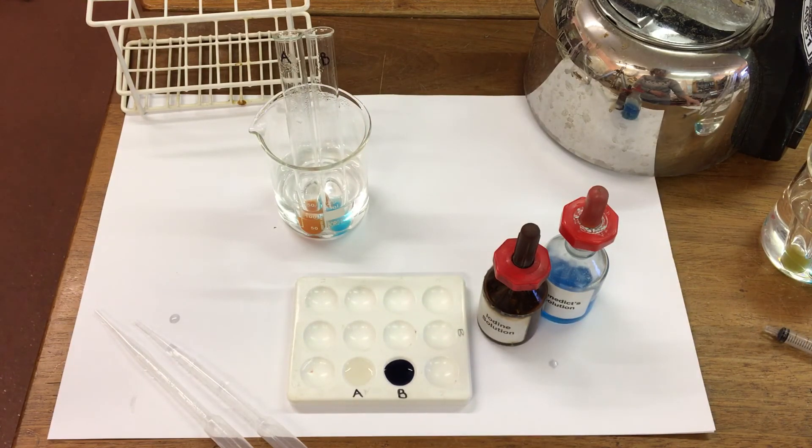So the brick red color means all the starch has been broken down into glucose. We've got a positive test for glucose in A, and in B the Benedict's stays blue.